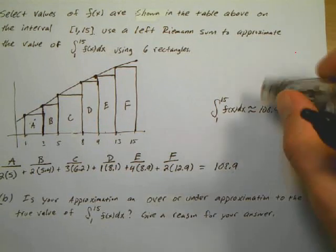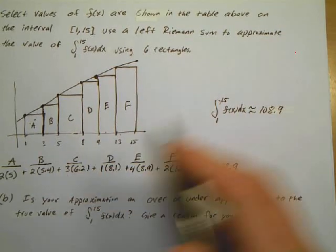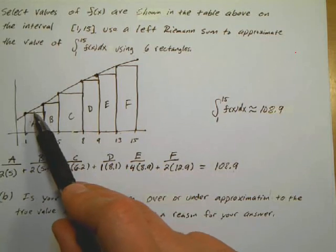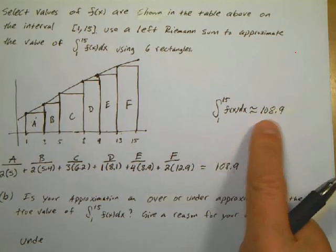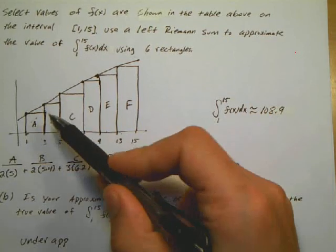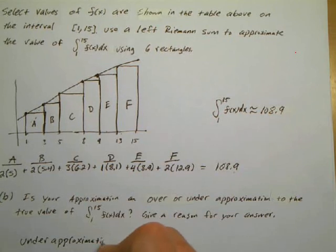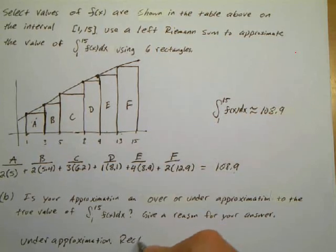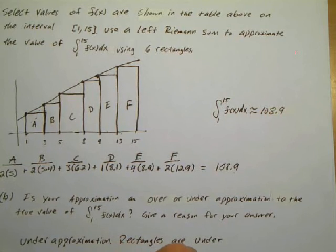For part B, the question asks if this is an over or under approximation. Since I sketched the graph, I can see that all these rectangles are underneath the curve, so all that unaccounted area creates an under approximation. So 108.9 is an under approximation to the true value because the rectangles are underneath the increasing curve.